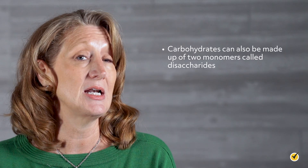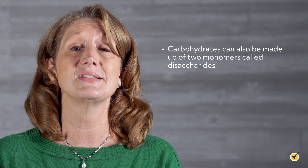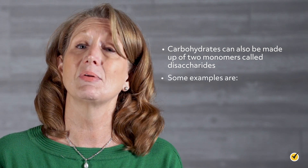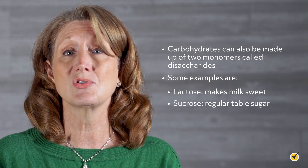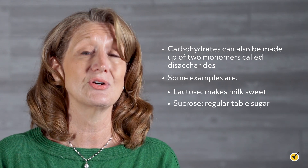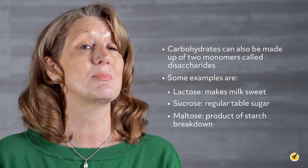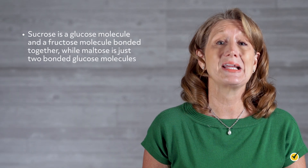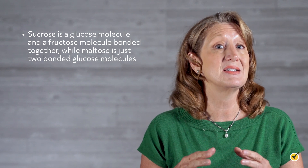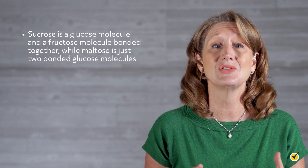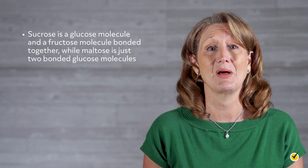Carbohydrates can also be made up of two monomers called disaccharides. Some examples are lactose, which makes milk sweet; sucrose, which is your regular table sugar; and maltose, which is a product of starch breakdown. Each of these disaccharides is made up of two other monosaccharides. For example, sucrose is a glucose molecule and a fructose molecule bonded together, while maltose is just two bonded glucose molecules.